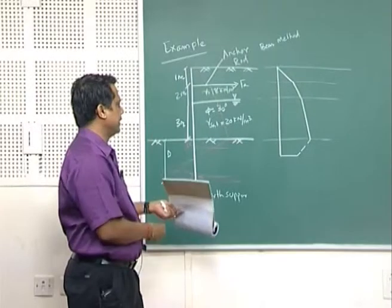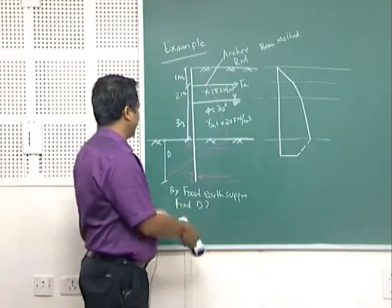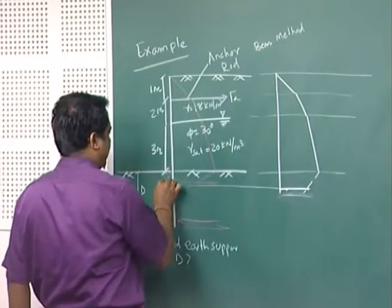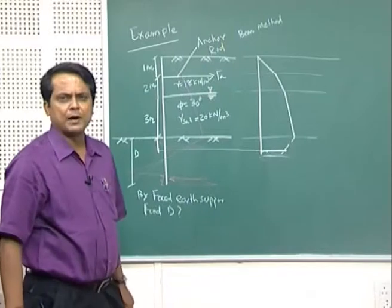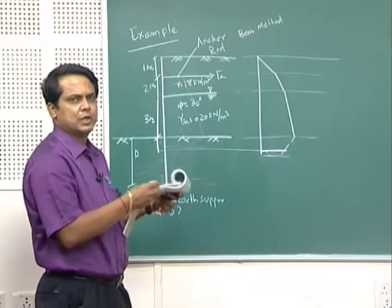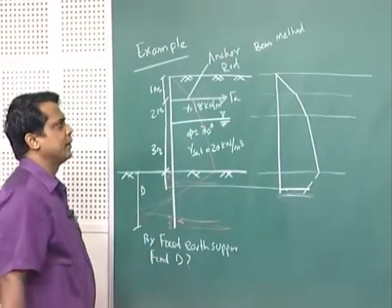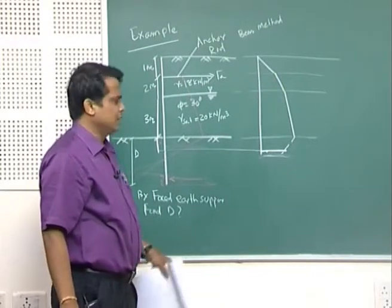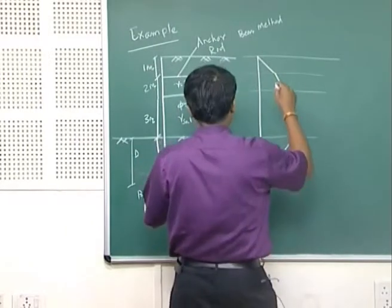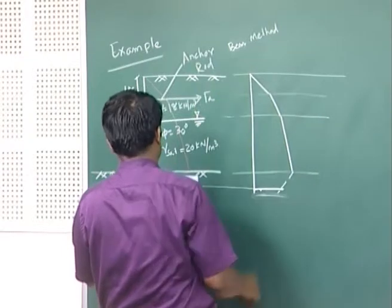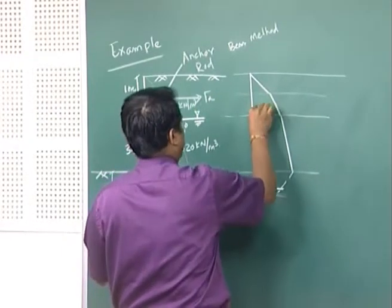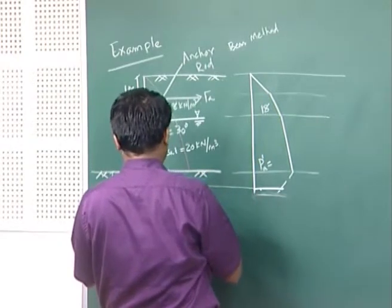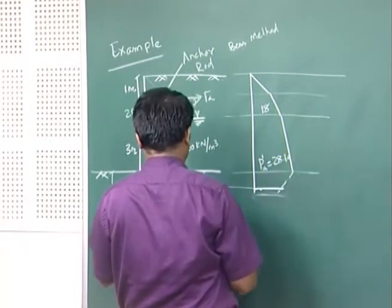Reviewing what was covered last class: taking the point of contra flexure, the upper part from there is considered as one unit and the bottom part as another unit. The assumption is a hinge support at this point, meaning two equal and opposite forces act there so the net force is zero. The height above is 1 meter, the next section is 2 meters. From the pressure distribution diagram, values are 28.19 and 15.2 kN/m².